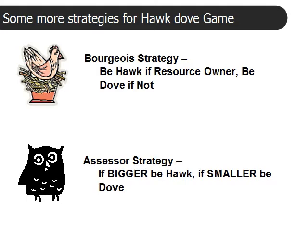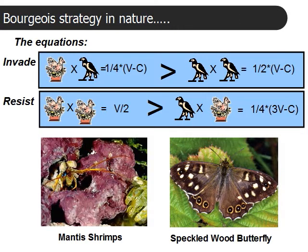We find the bourgeois strategy quite a bit in nature. Another strategy is the assessor strategy, which is to size up your opponent. Don't pay any attention to ownership — if you're bigger than your opponent, be a hawk; if you're smaller, be a dove. This is based on the basic principle that a smaller fighter is going to lose if they have to fight a much larger opponent. We find the bourgeois strategy in nature in many, many situations. Let's look at the equations first, and then talk about some of the animals that play the bourgeois strategy.